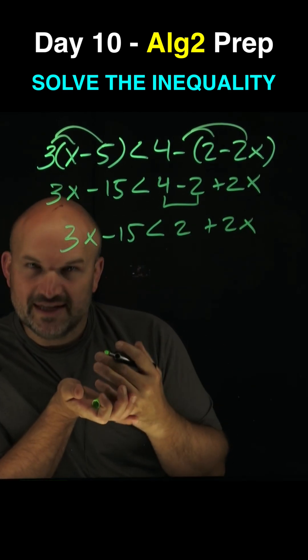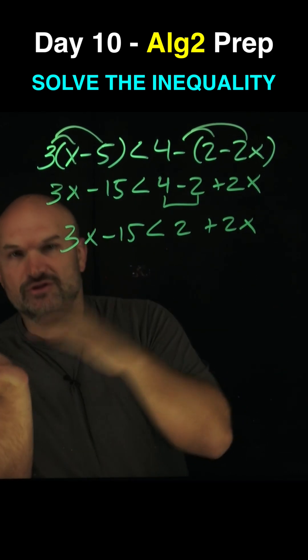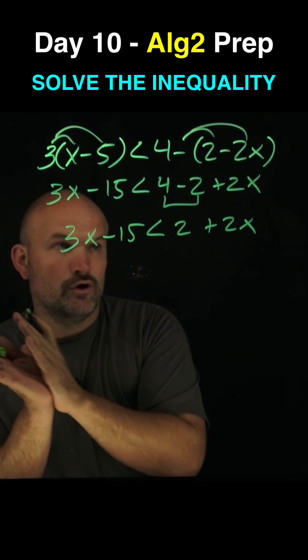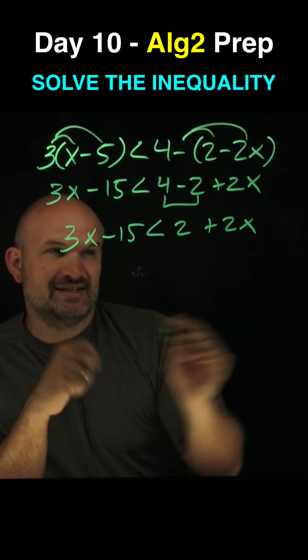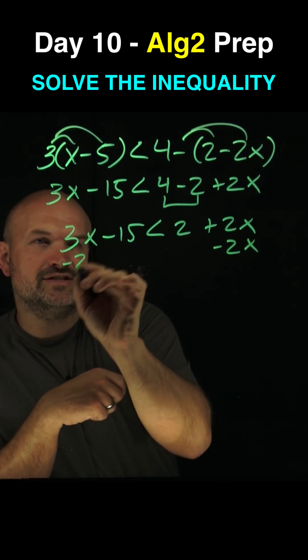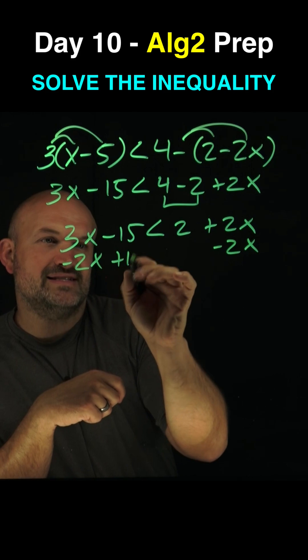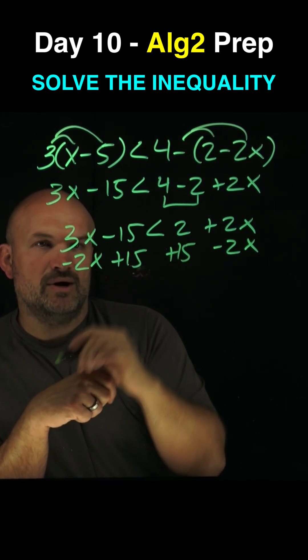Now remember, when we're solving an inequality, just like we're solving an equation, we want to get all of our variables over to the same side. Preferably, I like to have one on the left-hand side. You can always reflect it at the end. So let's subtract this 2x over here. And then at the same time, we can add the 15 on both sides as well.